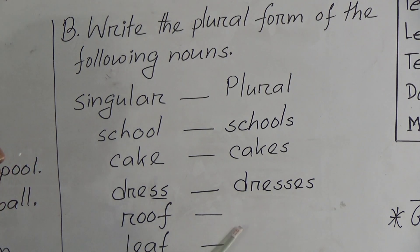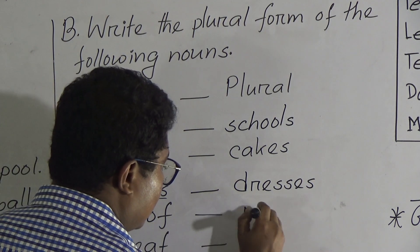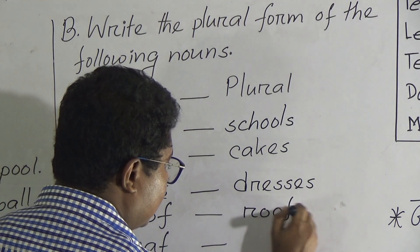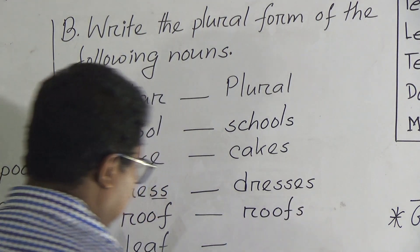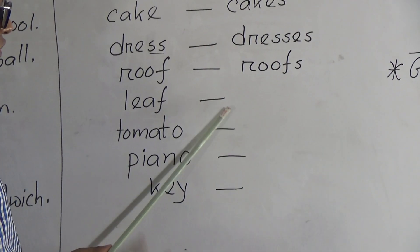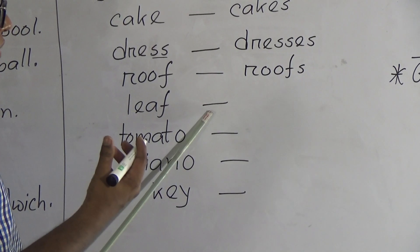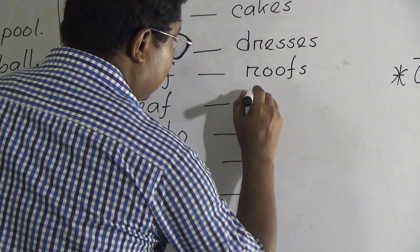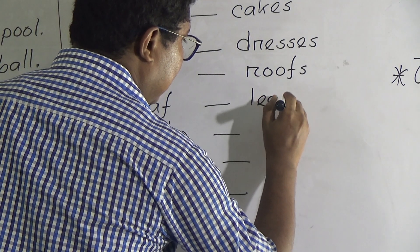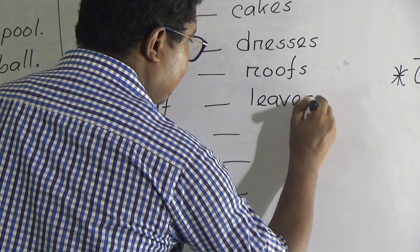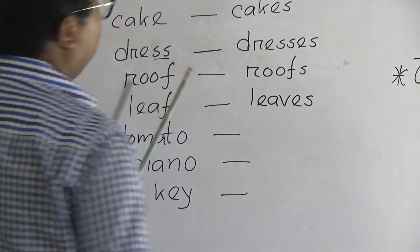'Roof' — plural form is 'roofs'. Next is 'leaf' — plural form is 'leaves', L, E, A, V, E, S. One leaf, many leaves.